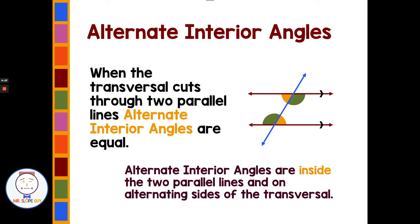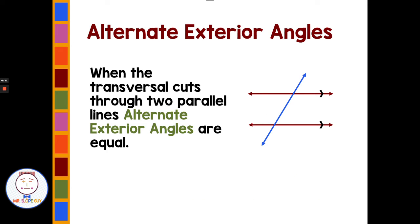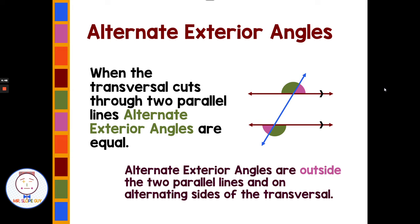For our third and last set, we have alternate exterior angles. Exterior means outside. When the transversal cuts through two parallel lines, alternate exterior angles are equal. They are outside the two parallel lines on opposite — alternate — sides of the transversal. The two angles in green are alternate exterior and are always equal or congruent, and the two in purple are also always equal. You need to recognize them by name and state that as your math reason — 'it looks like it' is not a good math reason.